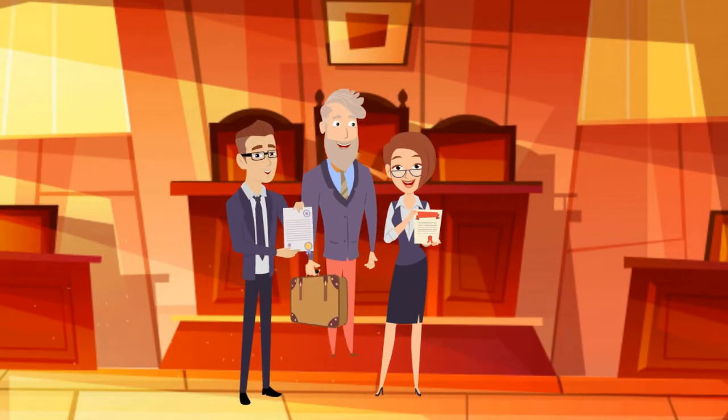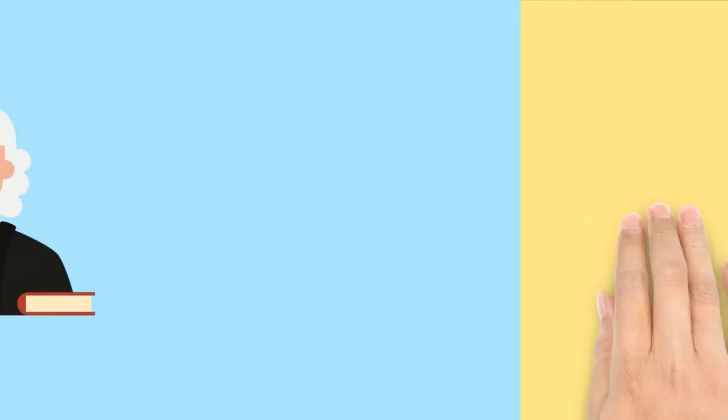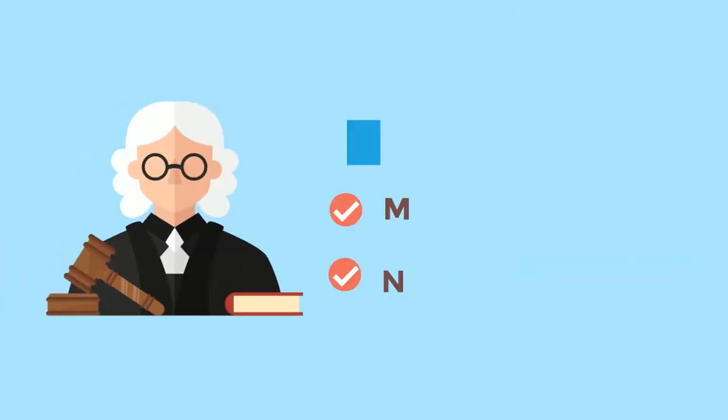The parties can reach a fair agreement regarding the division of property, or can ask the judge to make a ruling on the matter. The court first determines whether property is marital or non-marital property.